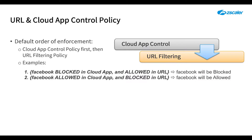By default, Cloud App Control Policy takes precedence over the URL Filtering Policy. The Zscaler service will apply the Cloud App Control Policy to a web transaction before applying the URL Filtering Policy. If a user requests a Cloud App that you explicitly allow with the Cloud App Control Policy, the service only applies the Cloud App Control Policy and does not apply the URL Filtering Policy — it bypasses URL Filtering and proceeds straight to evaluating browser control.